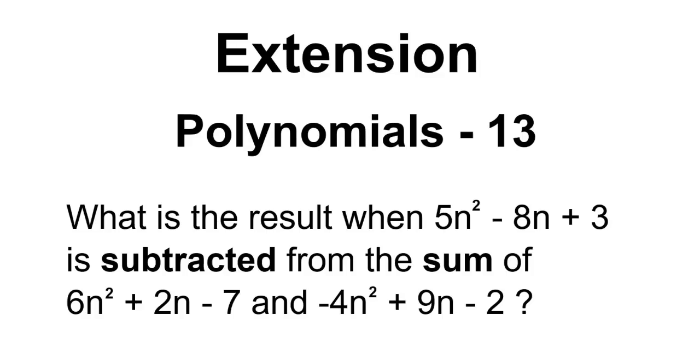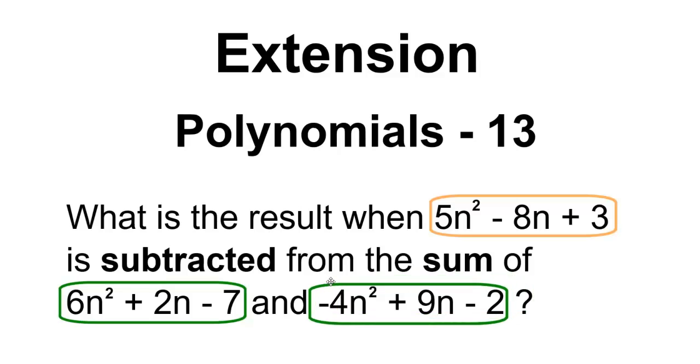Extension Polynomials number 13. What is the result when 5n squared minus 8n plus 3 is subtracted from the sum of 6n squared plus 2n minus 7 and negative 4n squared plus 9n minus 2?